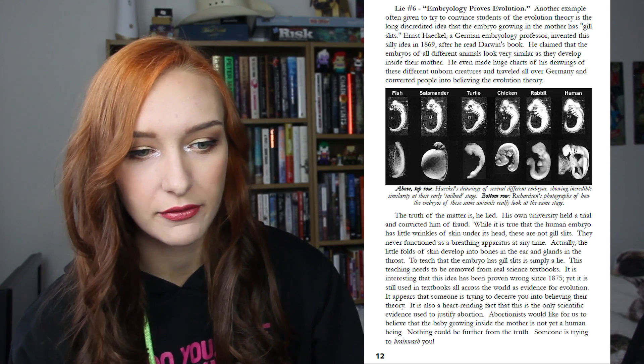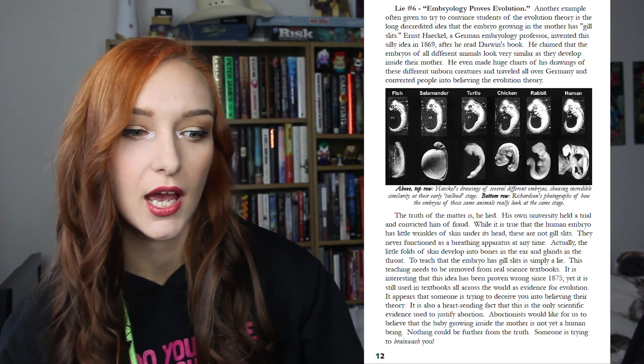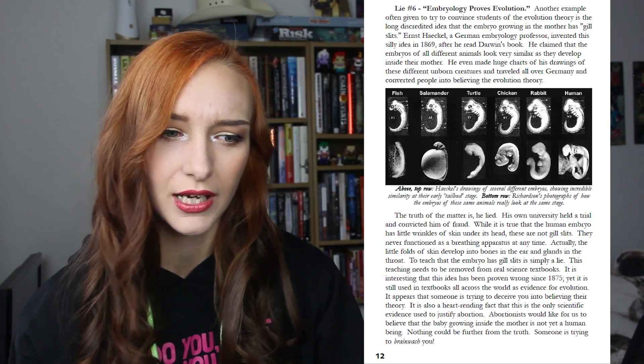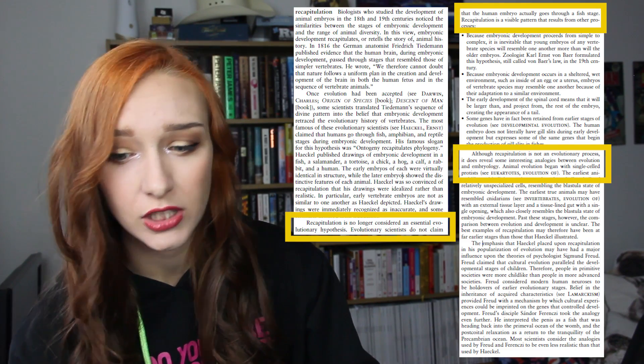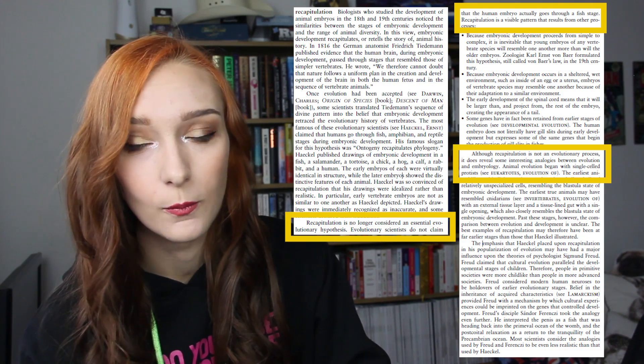His next point is super dishonest. He references recapitulation theory and then tries to debunk it while saying things like 'this teaching needs to be removed from real science textbooks.' He says it's interesting that this idea has been proven wrong since 1875 and yet it's still used in textbooks all across the world as evidence of evolution. Except that's the point — it is debunked, and it's not taught as scientific fact in any reputable textbook. In reputable science textbooks, in decent schools, this is not taught as fact. I've heard there are some outdated US textbooks that did include it at one point, but today no genuine, accredited, peer-reviewed textbook would ever try to claim it as fact — and if some schools are using textbooks with this theory in them, it's just another argument for why we need better funding for education.